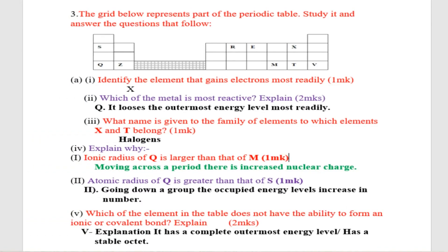(ii) Which metal is most reactive? Explain. Q is the most reactive because it loses the outermost energy level electrons readily. (iii) What name is given to the family of elements to which X and T belong? That family is halogens.